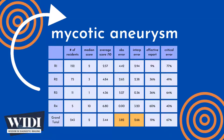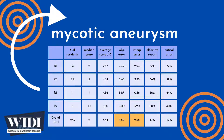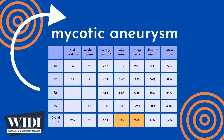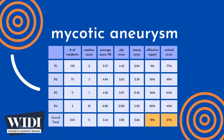We define an effective report to be one which achieves scores between 7 and 10. In terms of letter grades, this would be an A or a B. In this most missed case, 19% of residents produced effective reports.